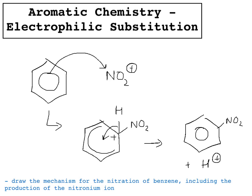There are a couple of things to remember here. The arrow goes from the benzene ring to the nitronium ion. You've got to be really careful when drawing the partial ring — the ring that's been broken in the benzene. And you've got to remember that the hydrogen attached to the carbon that has just been bonded to the nitronium ion: that bond breaks, and the electrons go back into the ring to reform the benzene ring in the final product.